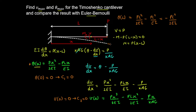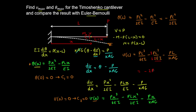The maximum deflection is the deflection at x equals L. Substituting L: PL³ / 6EI minus PL³ / 2EI minus PL / (κAG). The second term can be written as 3/6, giving minus 2PL³ / 6EI, which simplifies to minus PL³ / 3EI, minus PL / (κAG). This is the maximum deflection, which is negative — that is, downward.